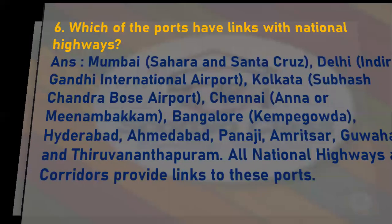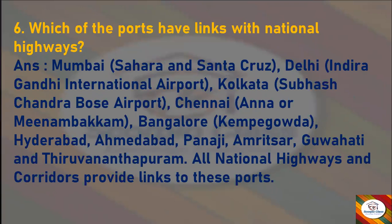Next question: which airports have links with national highways? Answer: Mumbai — Chhatrapati Shivaji (Sahar and Santa Cruz), Delhi — Indira Gandhi International Airport, Kolkata — Subhash Chandra Bose Airport, Chennai — Anna International (Meenambakkam), Bangalore — Kempe Gowda, Hyderabad, Ahmedabad, Panaji, Amritsar, Guwahati, and Thiruvananthapuram. All national highways and corridors provide links to these airports.